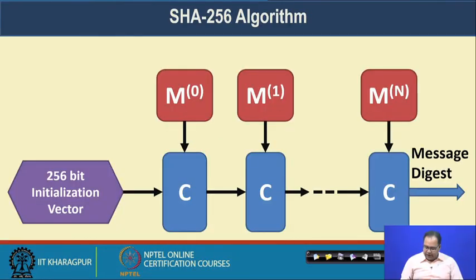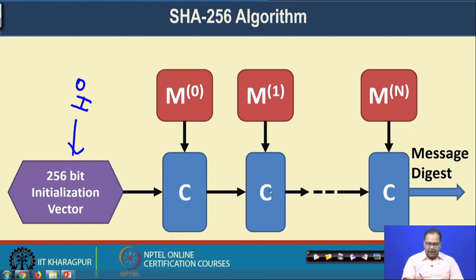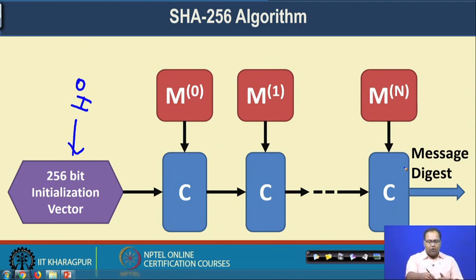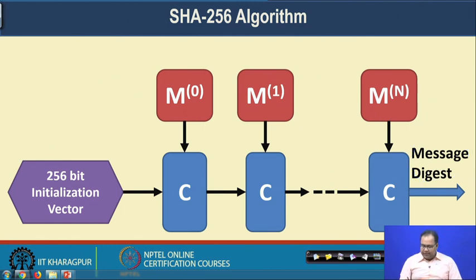For example: you start with a 256-bit initialization vector as H0. This is given as input to the compression function along with the first block, producing an output. That output is used with the next block, the compression function is applied again, and the result is added to the previous hash value. This process continues sequentially and the final result is the 256-bit message digest.